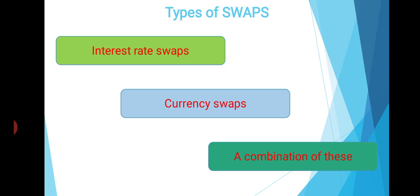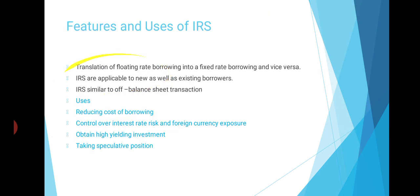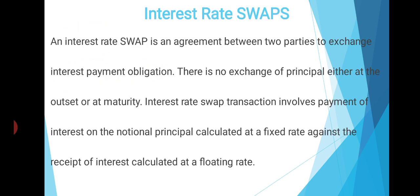There are different types of swaps: interest rate swaps, currency swaps, and a combination of these two. Interest rate swaps means an agreement between two parties to exchange interest payment obligations. The transaction is based on the interest payment obligation. There is no exchange of principal amount either at the outset or at maturity. The swap involves payment of interest on the notional principal calculated at the fixed rate against the receipt of interest calculated at the floating rate. The swap is on interest rate, not on principal amount.